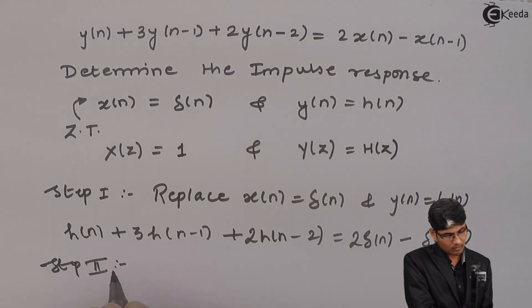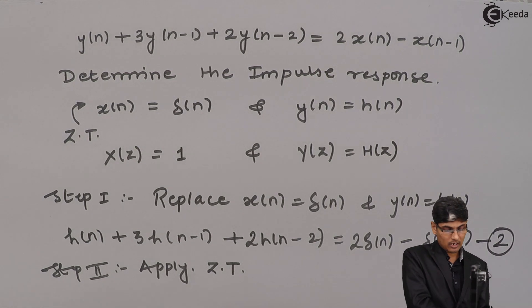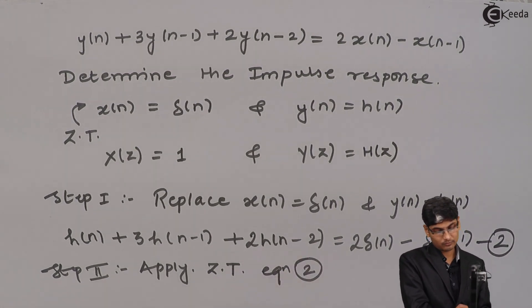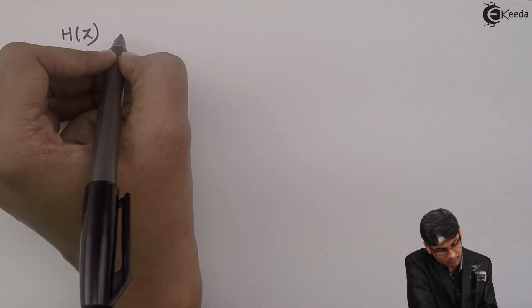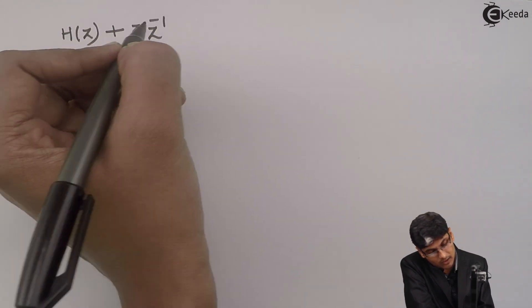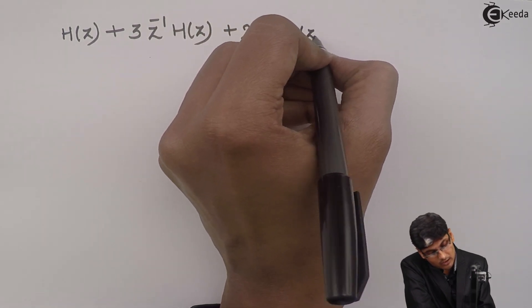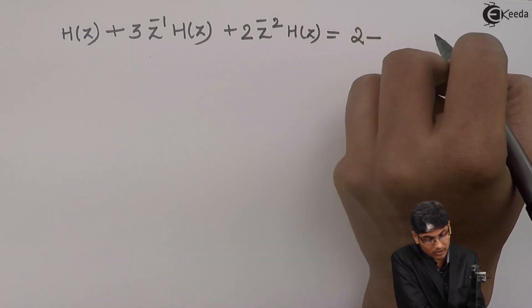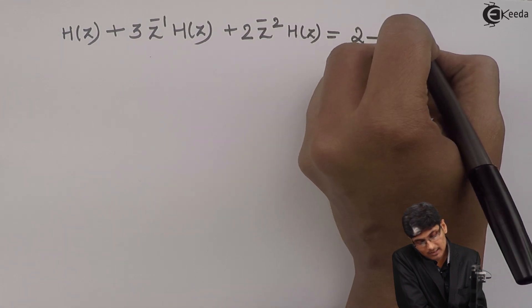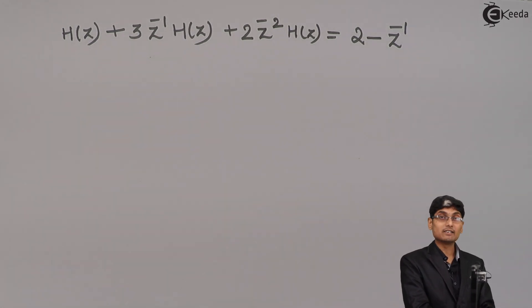Step 2: Apply Z-transform to this equation. When I apply the Z-transform, h(n) becomes H(z), h(n-1) becomes z⁻¹·H(z), and h(n-2) becomes z⁻²·H(z). The right-hand side gives 2·(1) - z⁻¹, so we get H(z) + 3z⁻¹H(z) + 2z⁻²H(z) = 2 - z⁻¹.